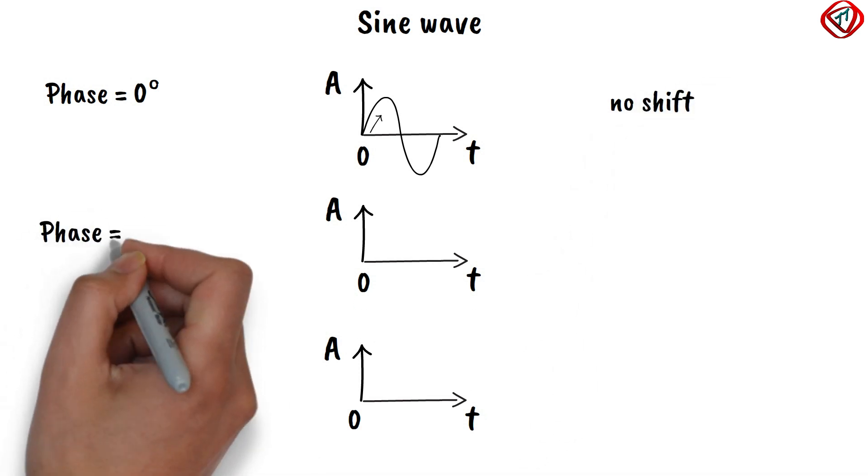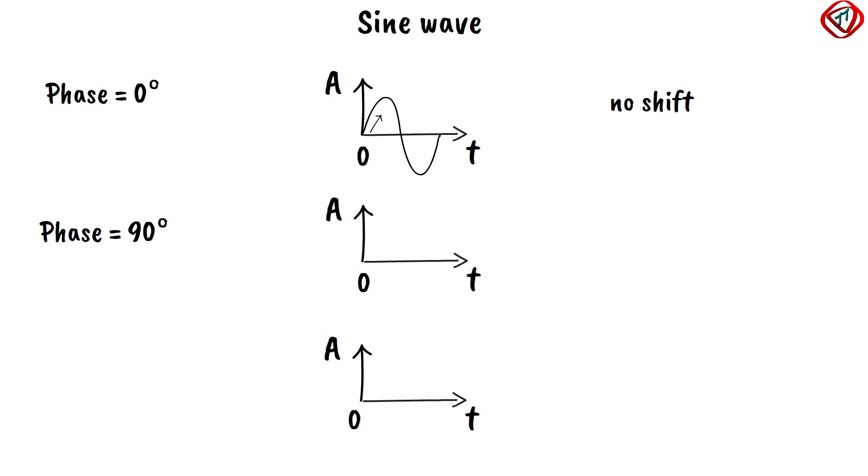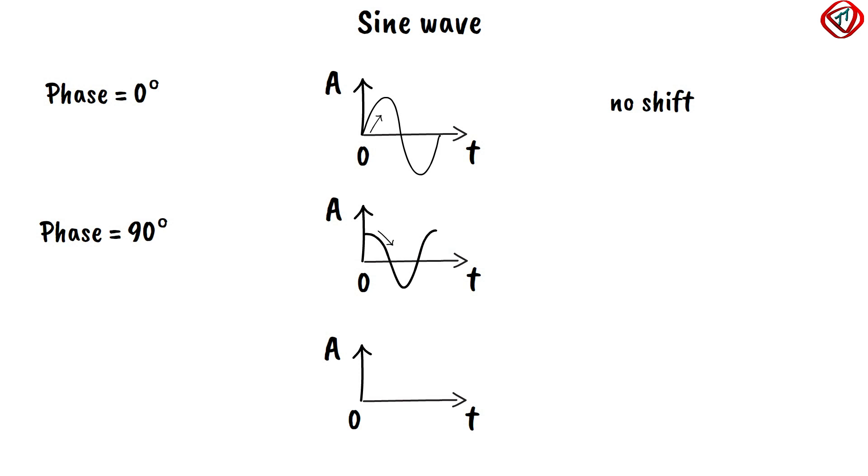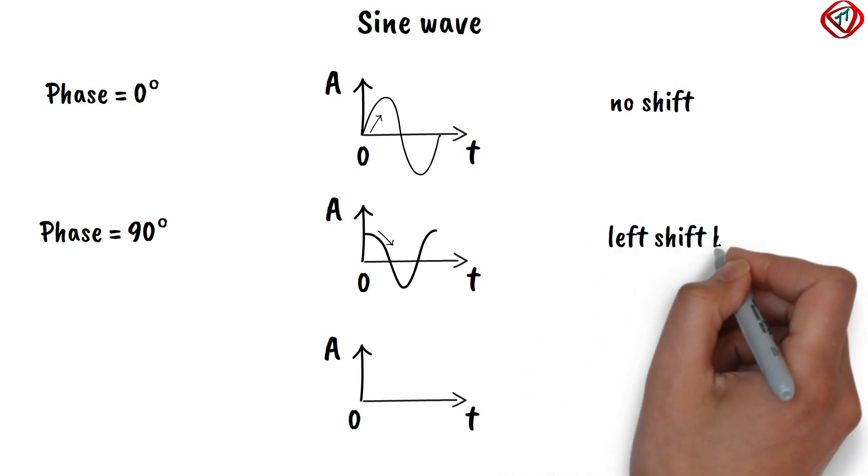If the phase is 90 degrees, then the sine wave starts with a peak amplitude and the amplitude is decreasing. It means the sine wave is shifted to left by one-fourth cycle.